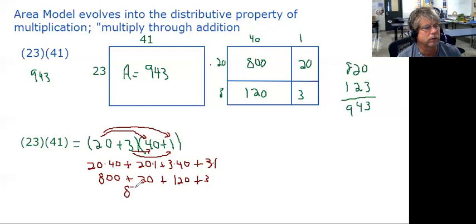820 plus 123 by adding groups, and then that's going to turn into 943. So that same problem can actually be done without a rectangle. It can just be done using the distributive property to do that multiplication. And so this is going to guide us into what we call the shortcut.